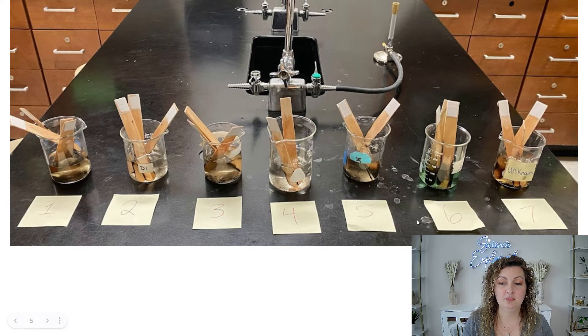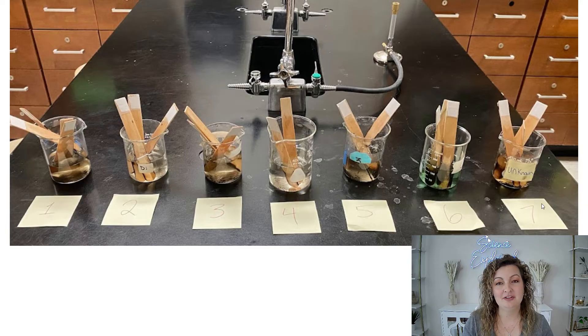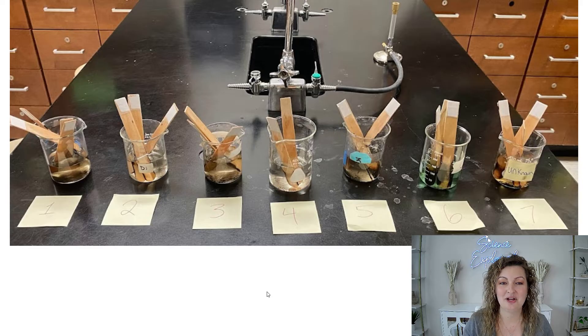So I go ahead and label them one through seven. Seven is going to be our unknown. In other words, we're going to test six different chemicals, but then our seventh one will be a repeat of one of these, and I need you all to figure out which one it is.